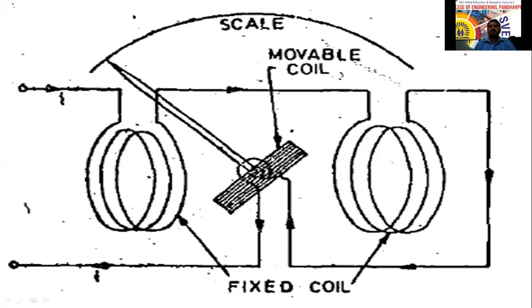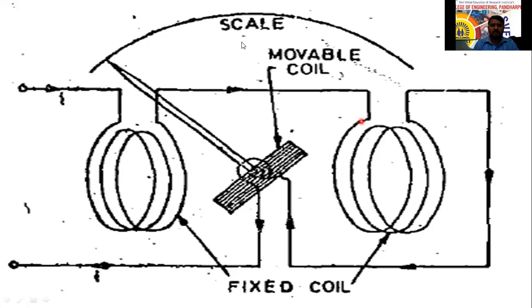This is the circuit diagram of the electrodynamometer. Here we have one fixed coil split into two parts. It is one coil only, but we split it into two halves — one half wound here and the other half there, with the connections continuing between them.